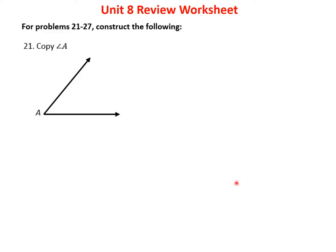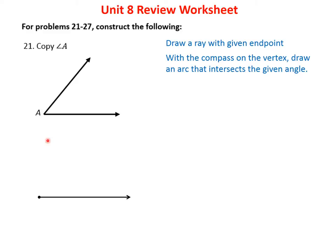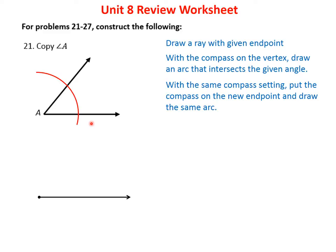For the last problems we do constructions with a ruler and compass. Problem 21: make a copy of angle A. First, draw a ray with an endpoint. Second, with the compass on the vertex of angle A, draw an arc that intersects both sides of the angle. Without changing the compass setting, place the compass on the new vertex and draw the exact same arc.